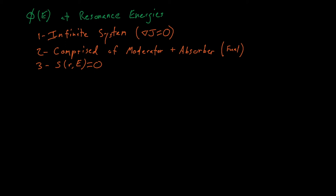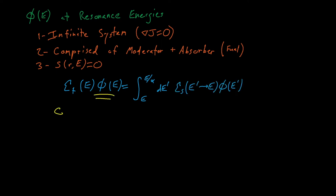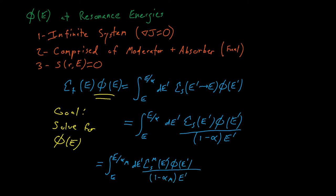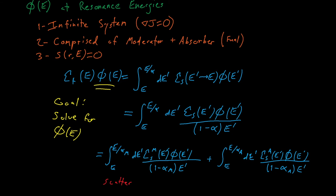From here, our Boltzmann transport equation gives that the collisional term is equal to the scattering source. We'll simplify the differential scattering probability, assuming again that we only have S-wave scattering. Next, we'll separate the scattering source into two terms — one for the moderator and one for the absorber, which is generally the fuel. Notice that both scattering source integrals are performed from energy E to E divided by alpha. Because the minimum energy a neutron can have after a collision is alpha times E, the maximum energy a neutron can have to scatter into energy E is E divided by alpha. The moderator and absorber materials probably have different values for alpha, so these two integrals are performed over a different range of energies.